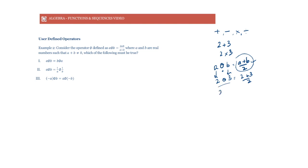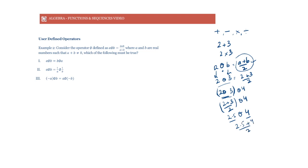If I were to write (2 θ 3) θ 4, we first solve what's in the bracket. 2 θ 3 = (2 + 3) / 2 = 2.5. Then 2.5 θ 4 = (2.5 + 4) / 2. So a user-defined operator works just like standard operators. When placed between two numbers, it defines what calculation to perform with those two numbers.